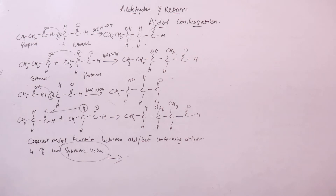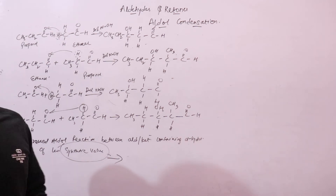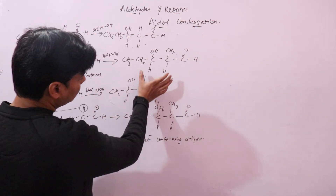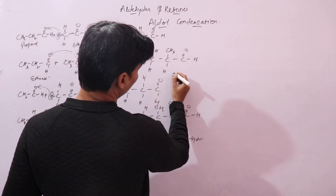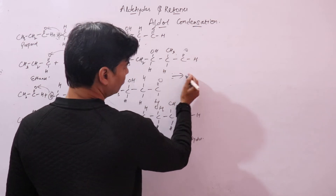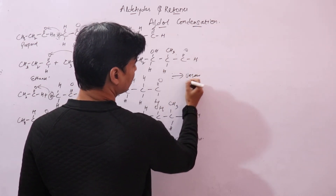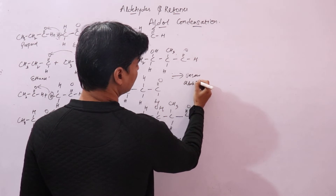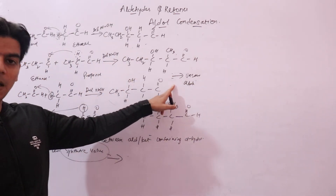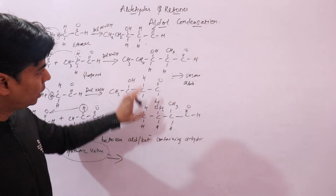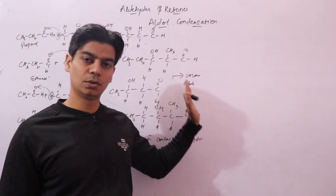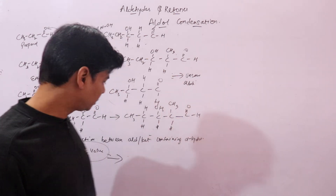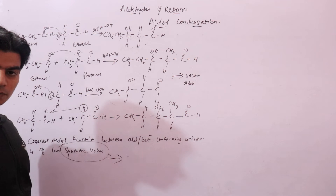Let's do a reaction between benzaldehyde and acetaldehyde. Also remember: if you heat all these aldol products, or treat them with dilute acids, they will lose a water molecule and undergo dehydration to give unsaturated aldehydes, which are more stable products because of conjugation.